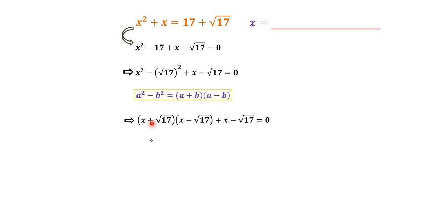Then we have x plus square root 17 times x minus square root 17 plus x minus square root 17 equals 0.